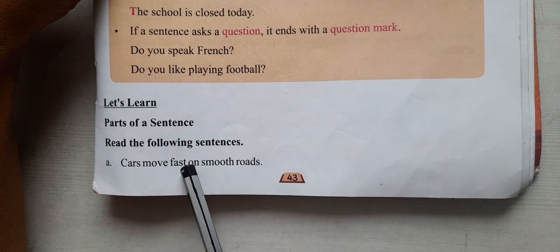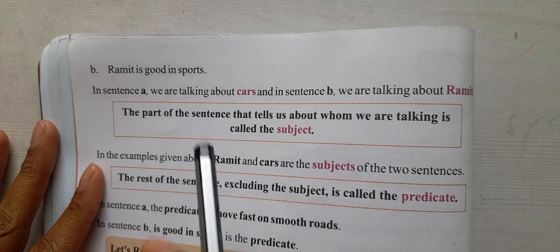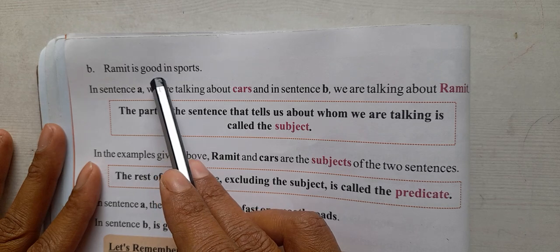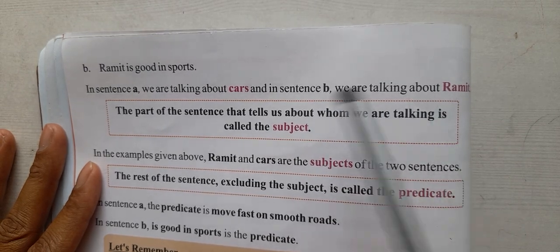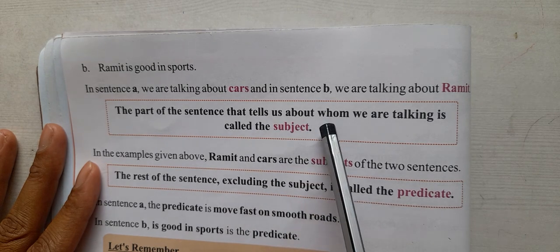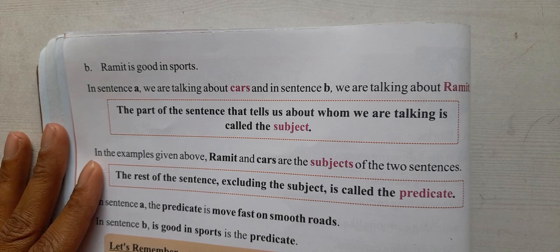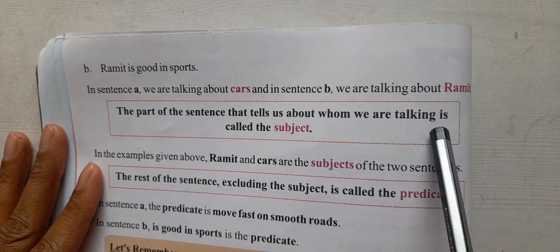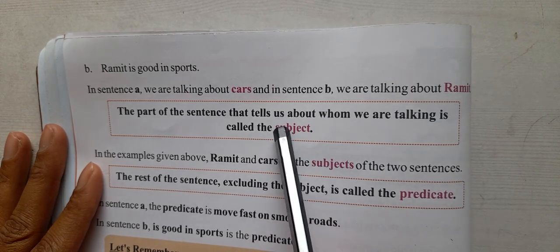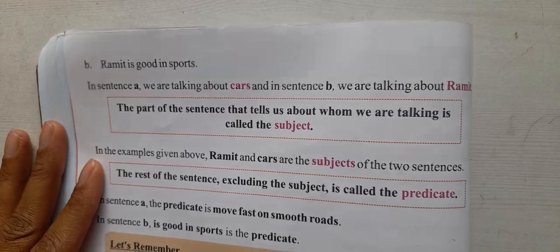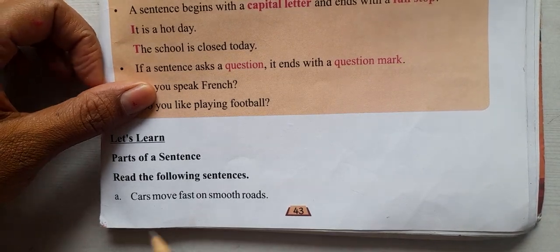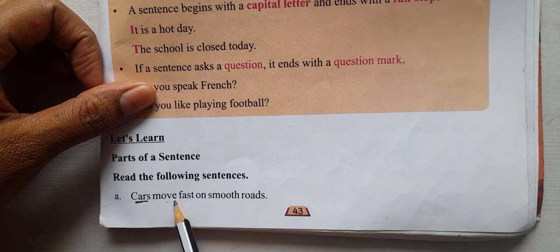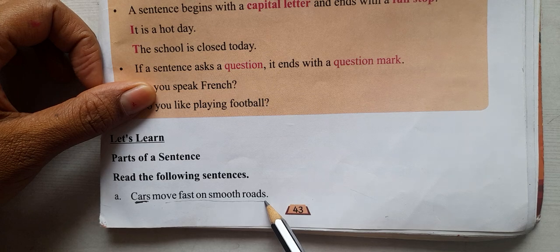Parts of a sentence: Read the following sentences. Sentence A: 'Car moves fast on smooth roads.' Sentence B: 'Ramit is good in a sport.' In sentence A we are talking about the car, and in sentence B we are talking about Ramit. The part of the sentence that tells us about whom we are talking is called the subject.